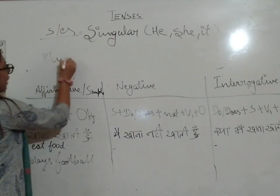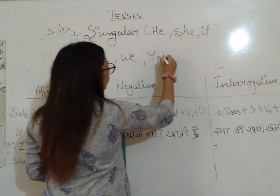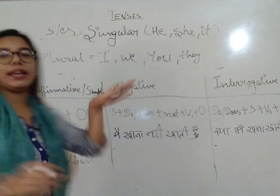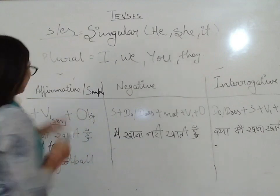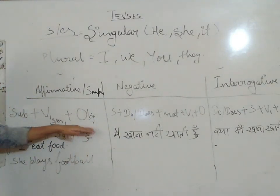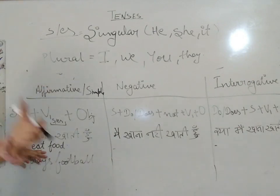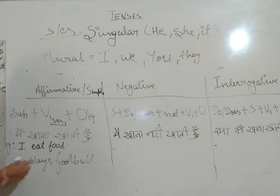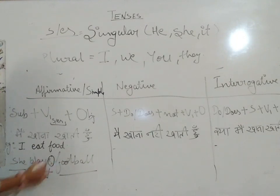To summarize: plural persons are I, we, you, they — with these we use 'do.' Singular persons are he, she, it — with these we use 'does.' Our affirmative sentence example is complete: 'She plays football.'